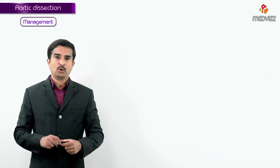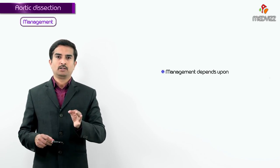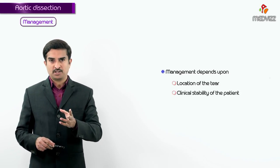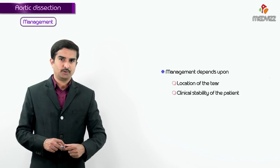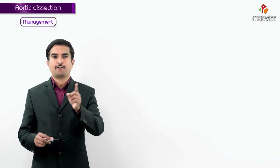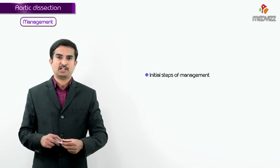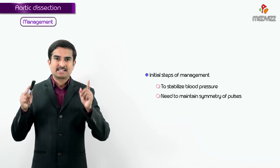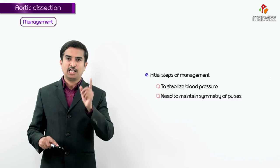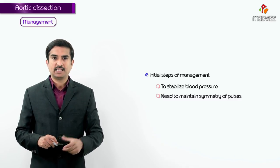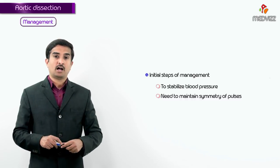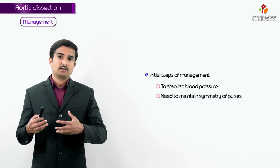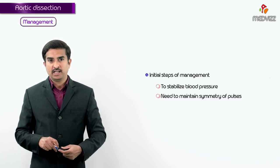Management of aortic dissection depends on the location of the tear and the clinical stability of the patient. The initial step of management is to stabilize blood pressure and maintain symmetry of the pulses. The initial goal targets heart rate and systolic blood pressure in an unstable patient.